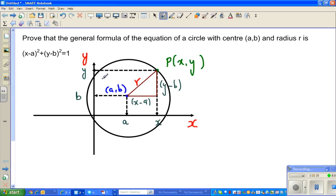And I've taken any arbitrary point on the circle with coordinates x and y. Point P(x,y). So the x-coordinate is x here and the y-coordinate is y.